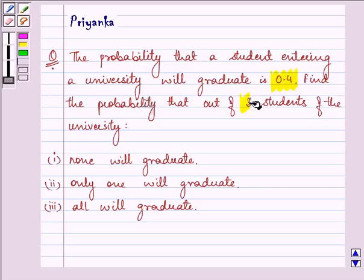Find the probability that out of 3 students of the university: (i) none will graduate, (ii) only one will graduate, and (iii) all will graduate.